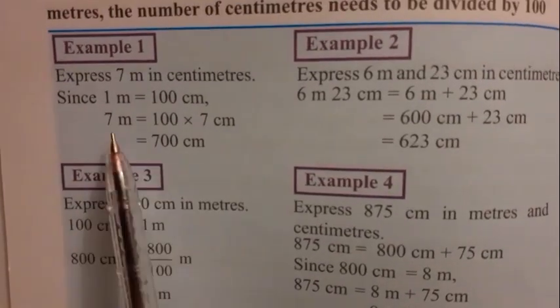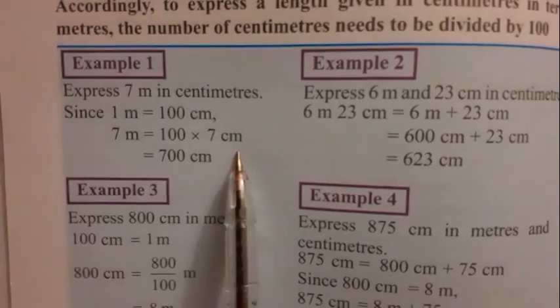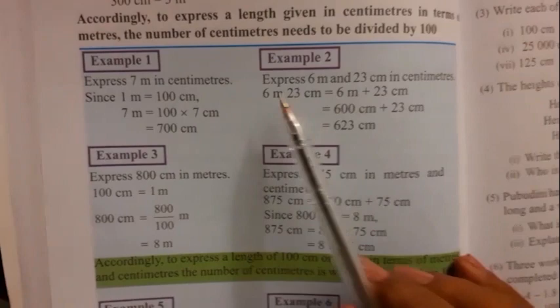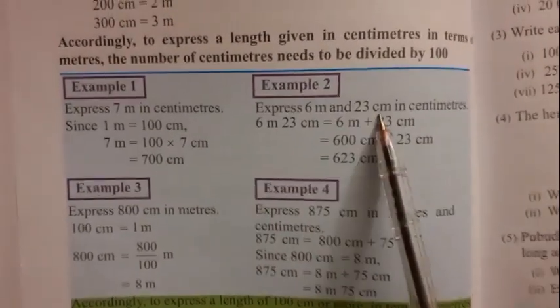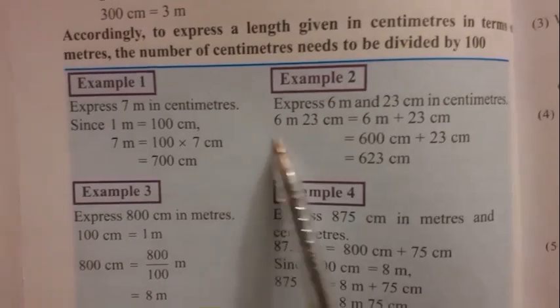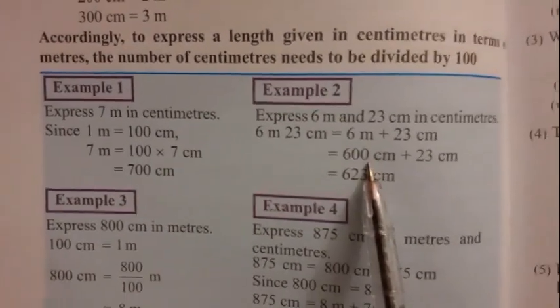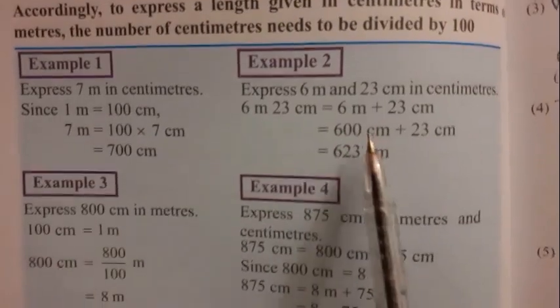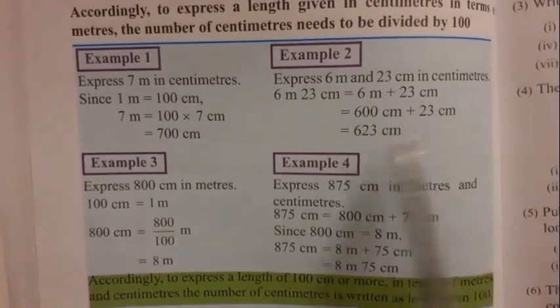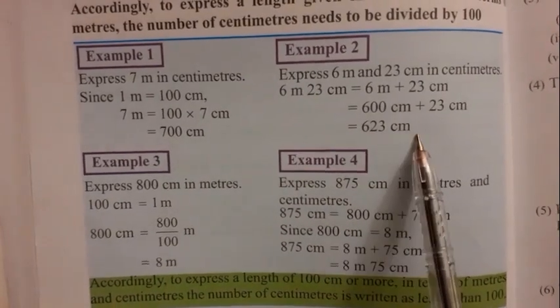Example 1: Express 7 meters in centimeters. 1 meter equals 100 centimeters, so 100 multiplied by 7 equals 700 centimeters. Example 2: Express 6 meters and 23 centimeters in centimeters. 6 multiplied by 100 equals 600 centimeters, plus 23 centimeters, equals 623 centimeters.